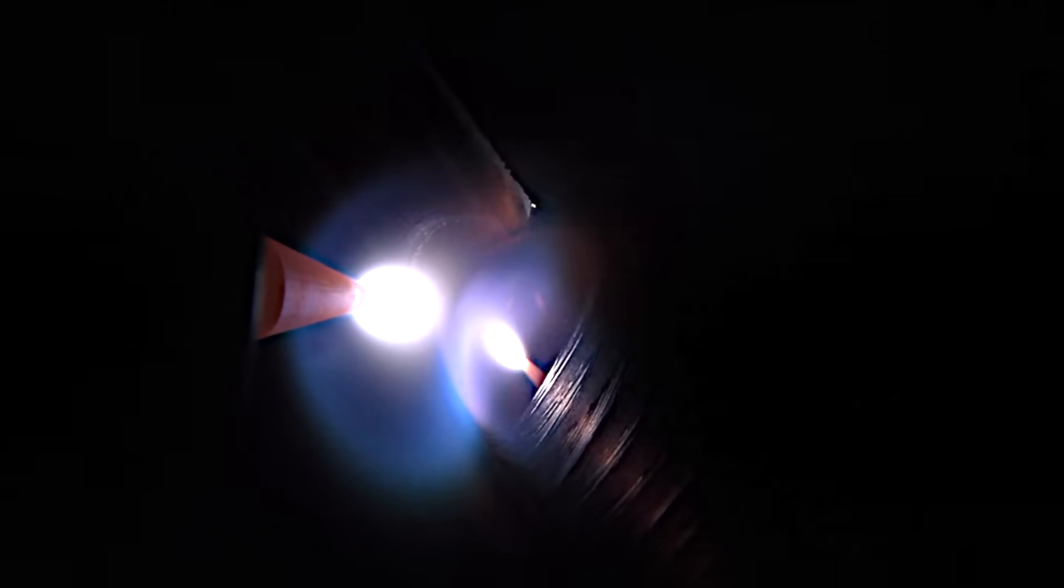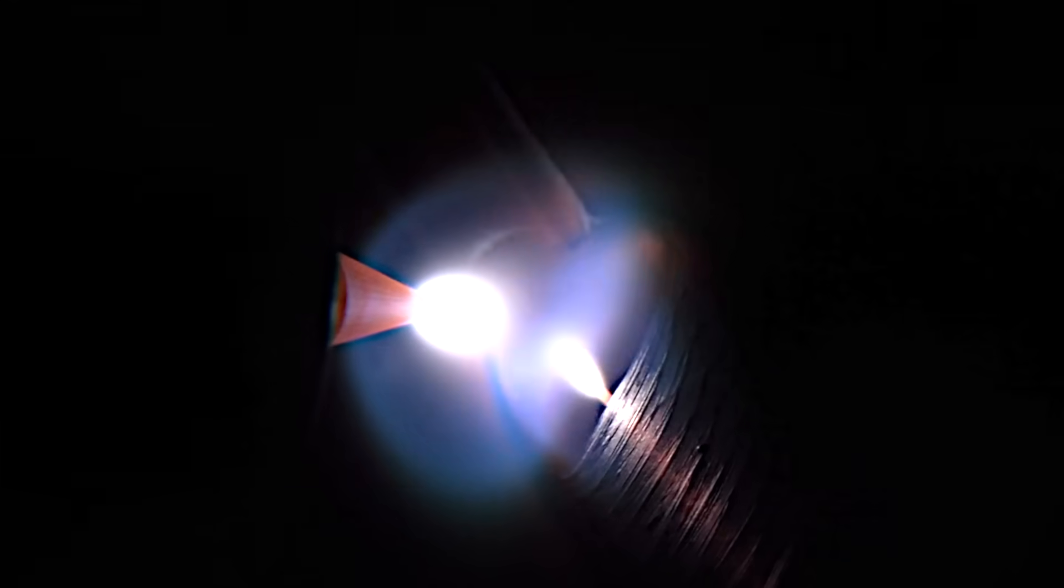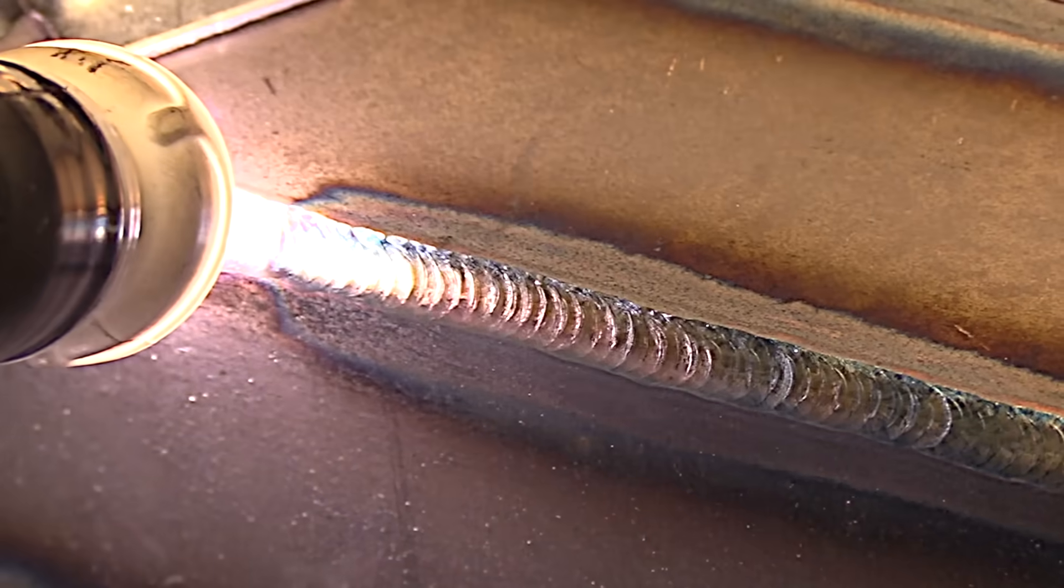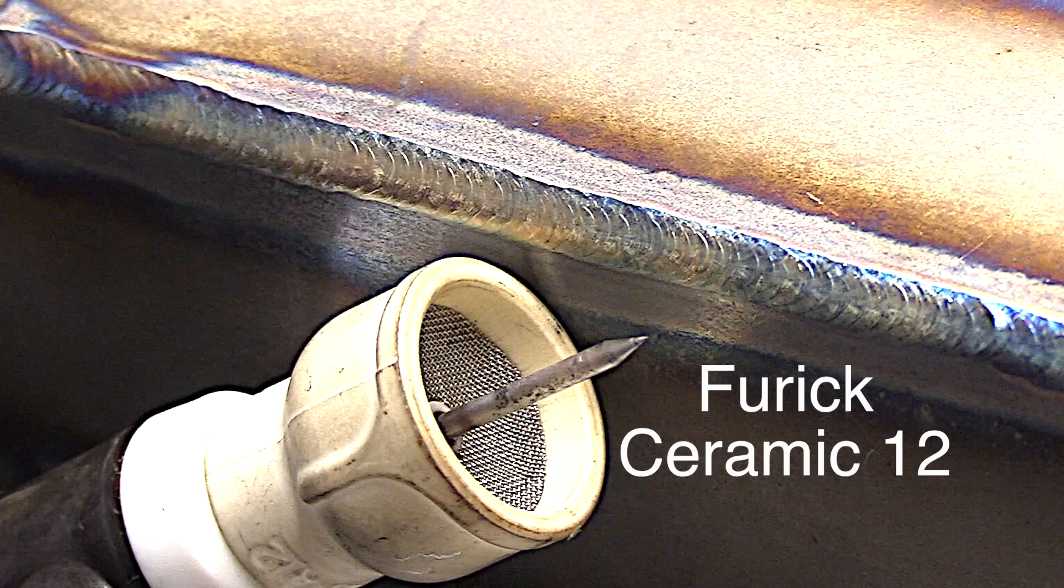Here's another perspective of it coming from behind here. You can see the puddle is just wrapping those corners so I could use a little less heat probably but it's working out pretty well. And the Furek number 12 cup is doing some really good shielding there.